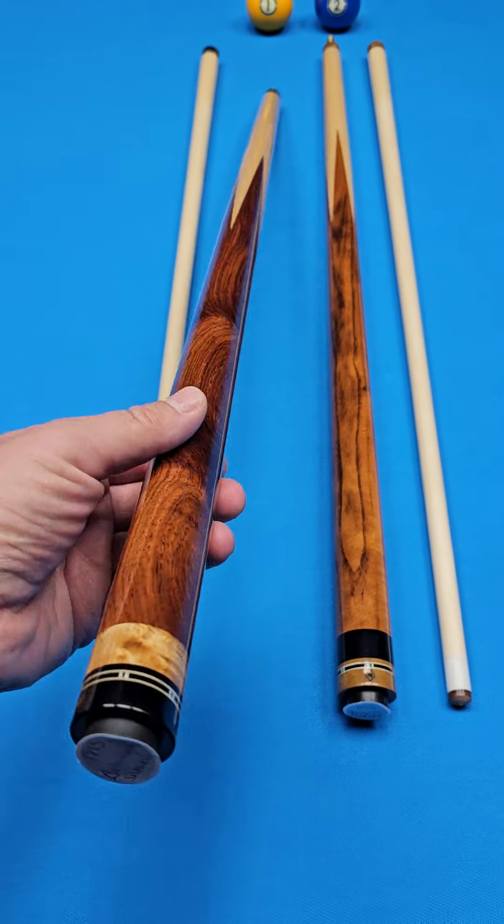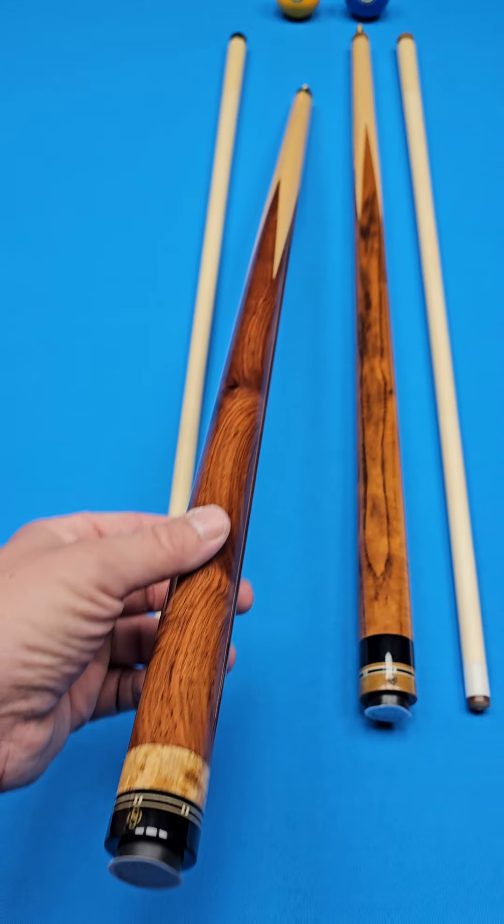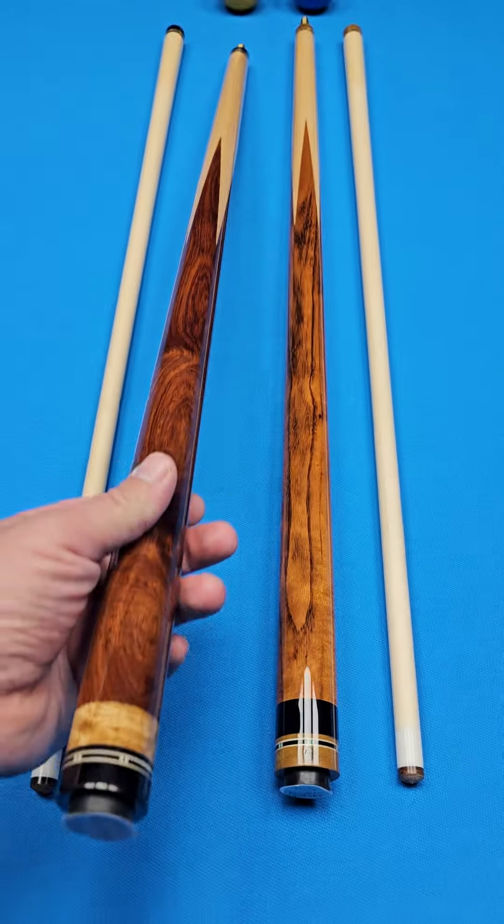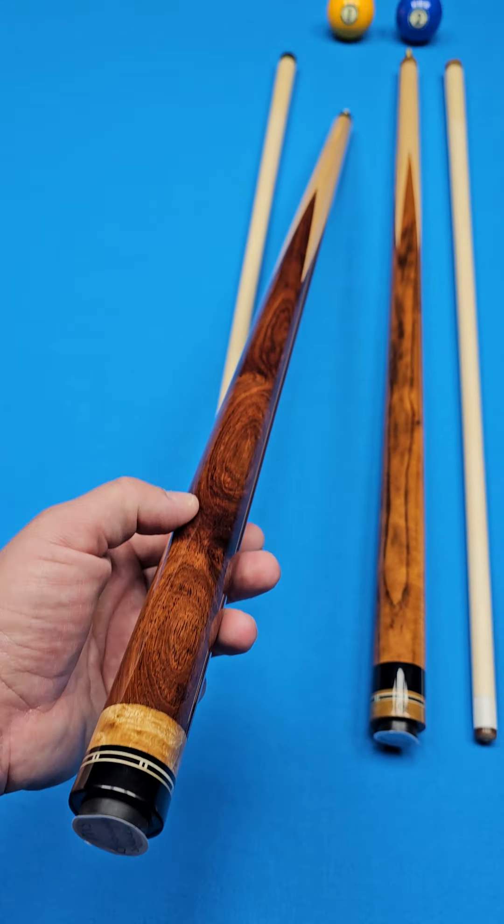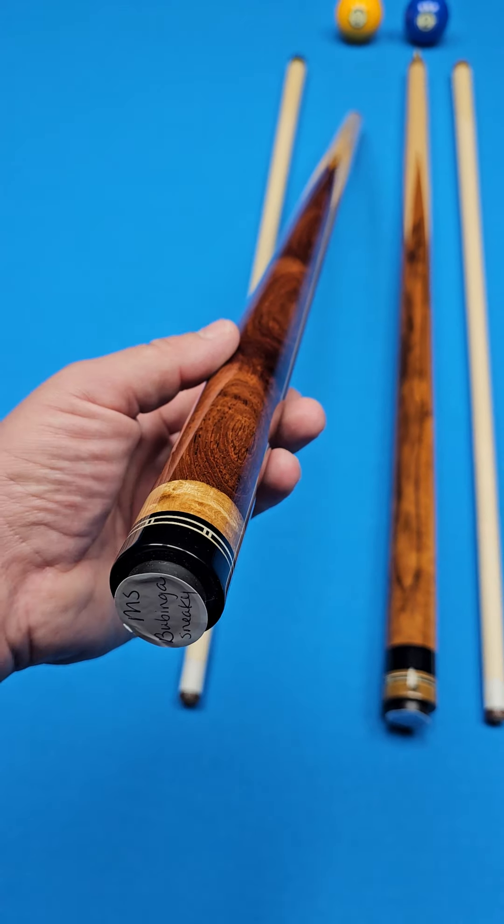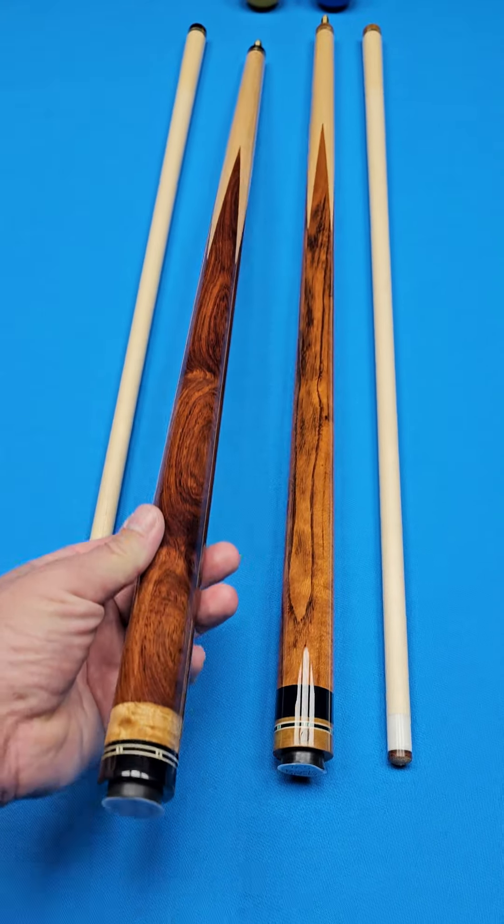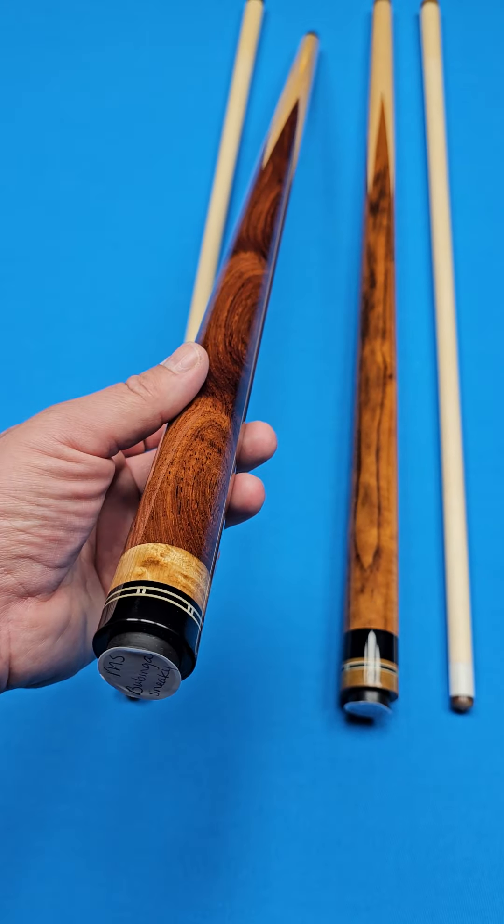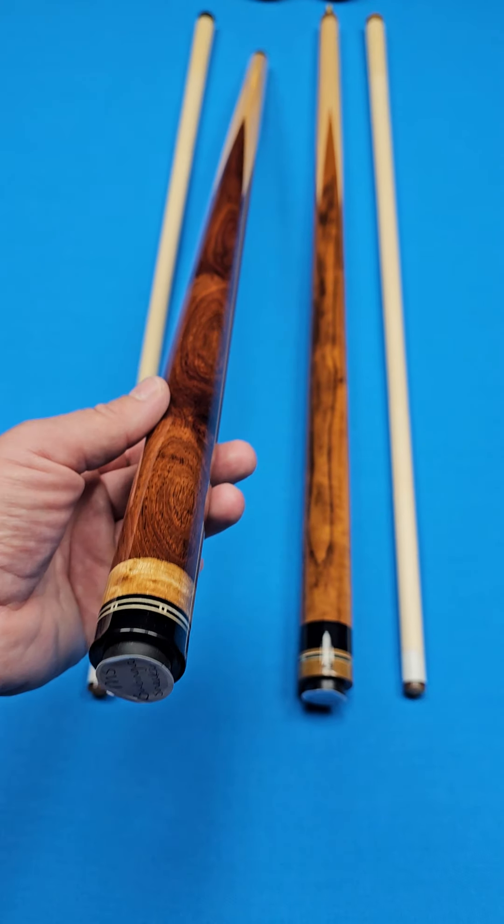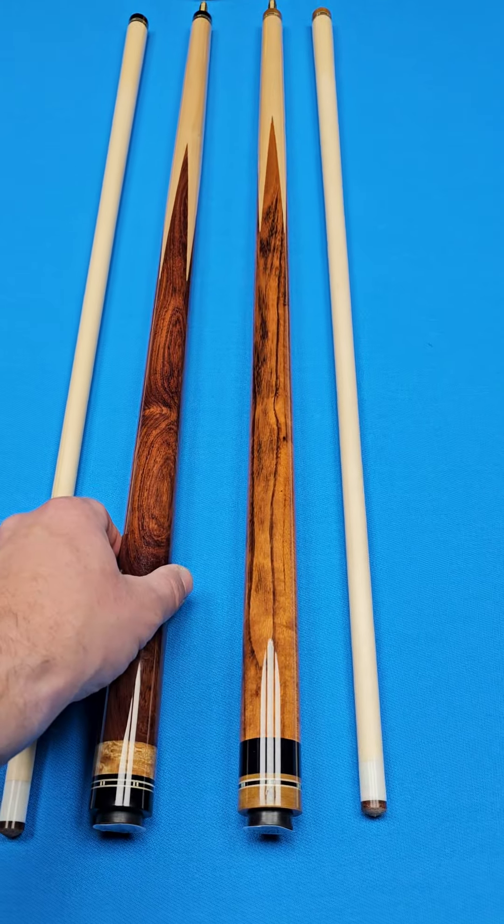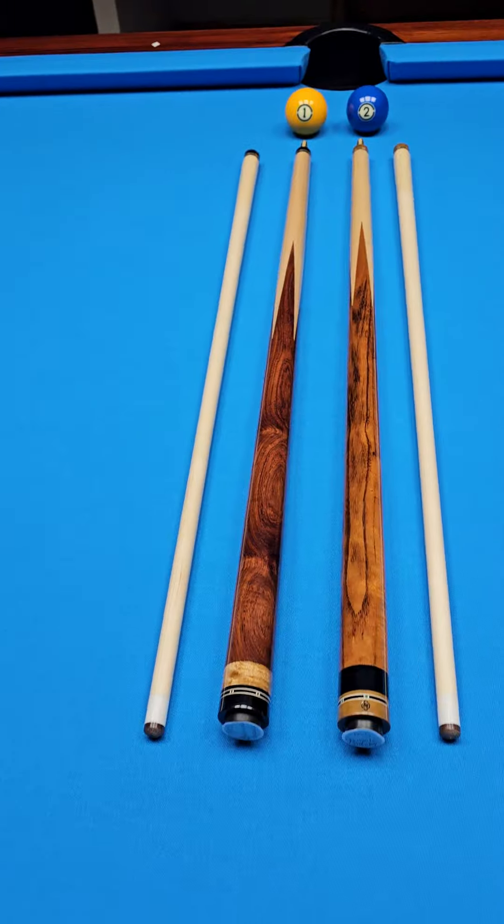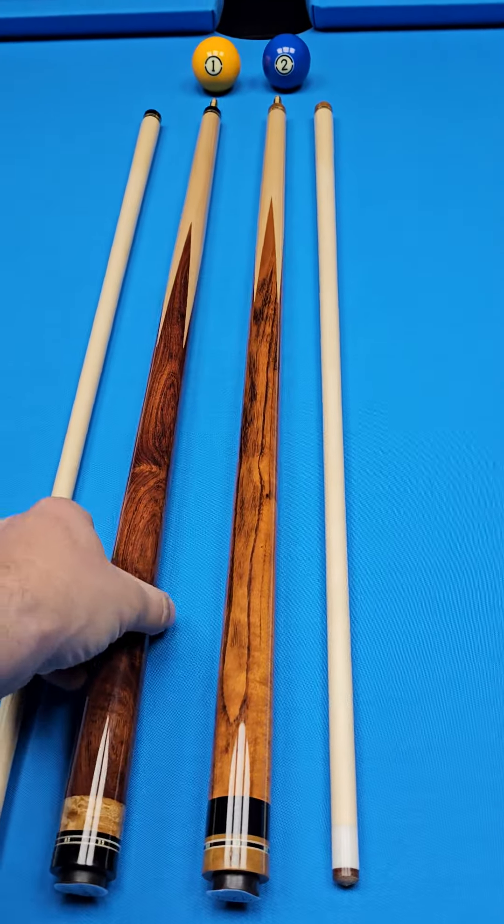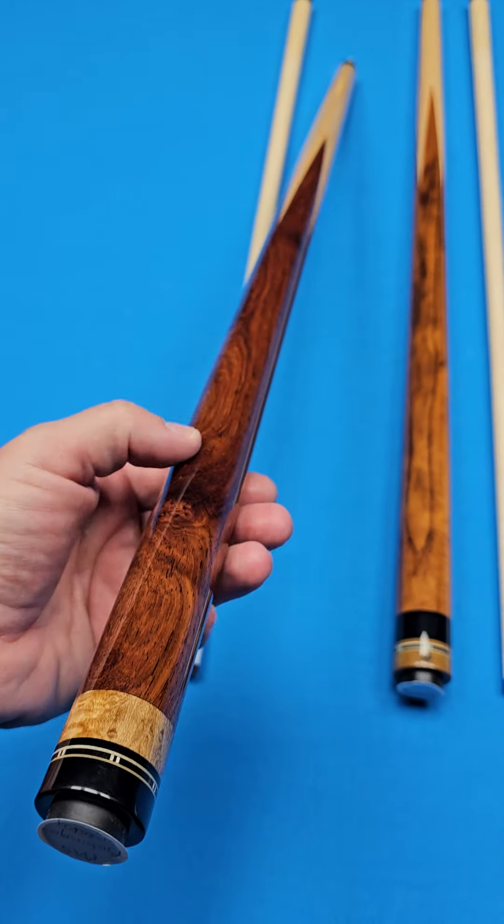Number one, that is Babinga. Usually this quality of wood, by the way, that you're going to see here in just a moment, if you're not already kind of hip to it, this quality of wood is something that you would expect to see in a cue that's worth thousands and thousands of dollars. Mike does not shortchange people when it comes to the quality of the wood, all the way from his most basic cue all the way up to a very expensive cue. So again, Babinga on the handle and points.